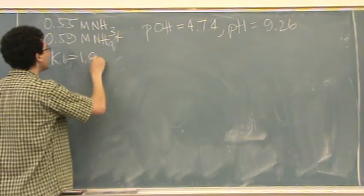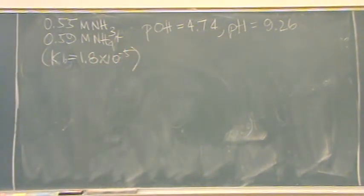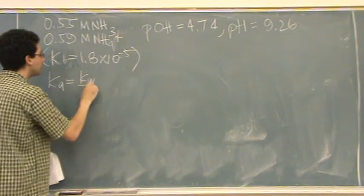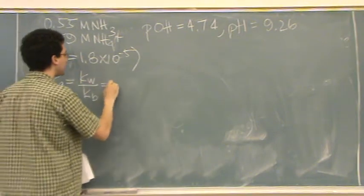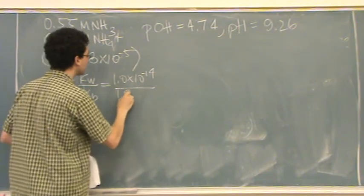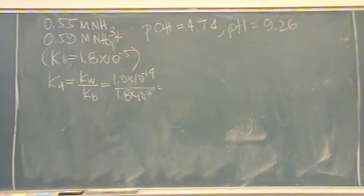Equals 1.8 times 10 to the minus 5. Here's KB. You can find KA if you wanted to. KA would just equal KW over KB. KW is 1.0 times 10 to the minus 14. KB is 1.8 times 10 to the minus 5. I think I wrote it down here but I never calculated it. But that's okay. So, I have all that.